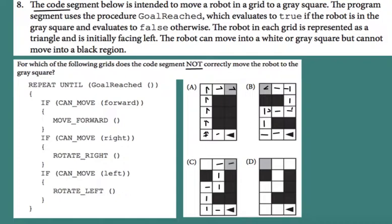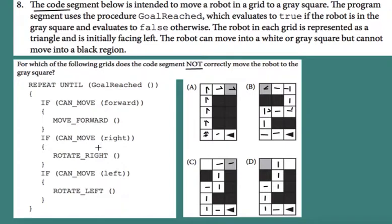Now the last one, grid D. The robot moves forward twice, can turn right — turns right. Moves forward twice, can turn right again — turns right. Moves forward; cannot turn right but can turn left — turns left. Moves forward twice. It checks if it can turn right — yes — so it turns right. Then checks if it can turn left — and now we try to continue.